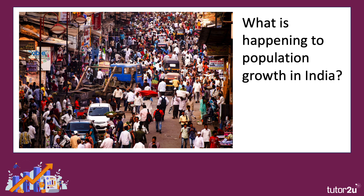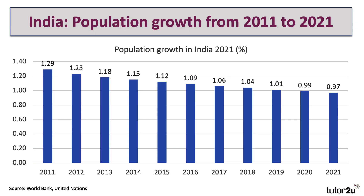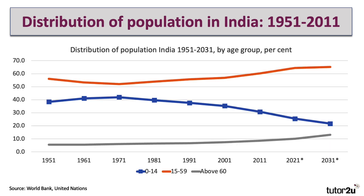What is happening to population growth in India? Indian population growth is also slowing down, but at a slower, more gradual rate. In 2020, it fell below 1% for the first time. Population growth is slowing, but India's demographic turning point will arrive later than for China. Indian population growth shown by age group percentages reveals that the percentage of those aged 0 to 14 is now falling, while the percentage above 60 is rising, but from a very, very low level.